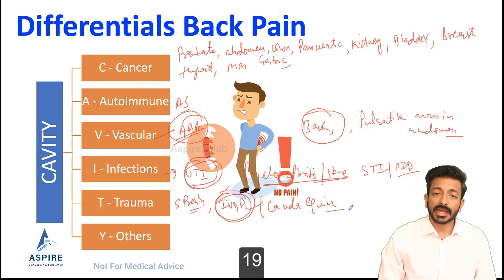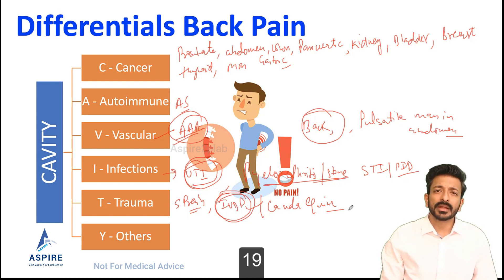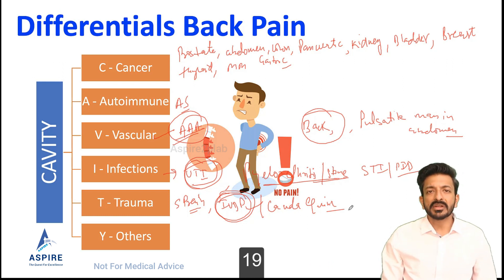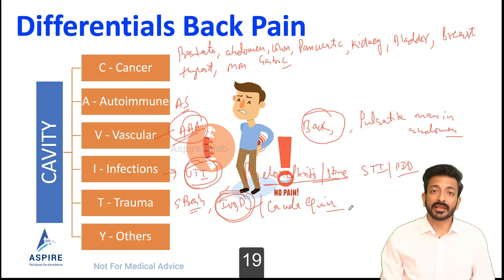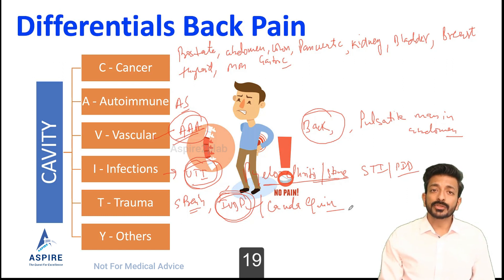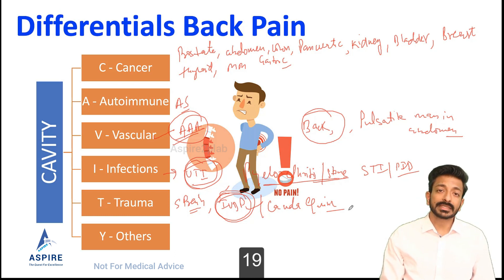When thinking about disc prolapse, always rule out cauda equina syndrome, which is a complication of IVDP. IVDP itself is manageable — rest, mobilization, X-ray — but cauda equina is a neurosurgical emergency. It presents with urinary retention or incontinence plus constipation. We must do an MRI to confirm, and then perform surgical decompression, otherwise it leads to irreversible neurological damage.